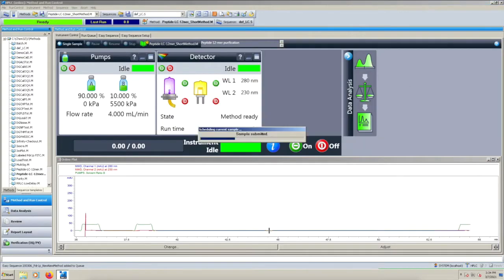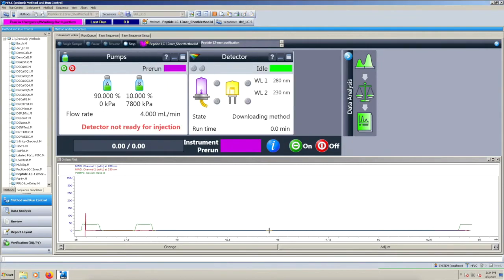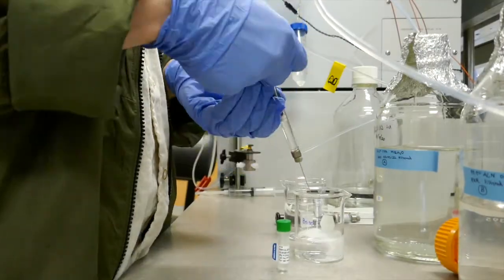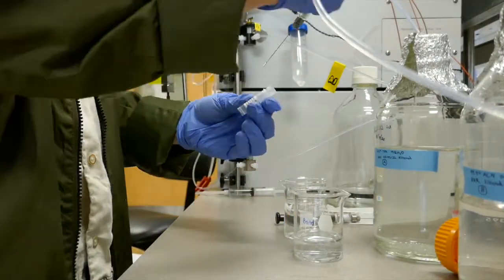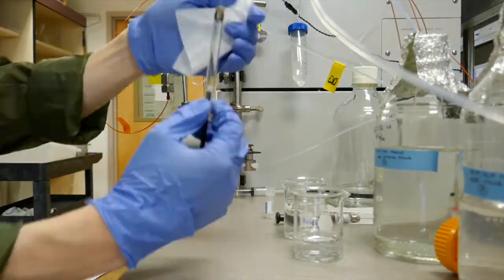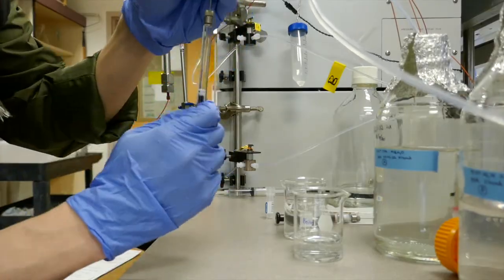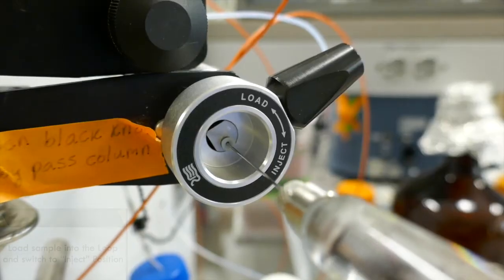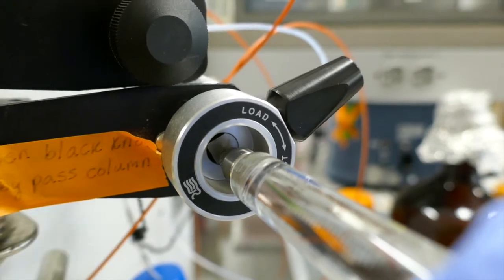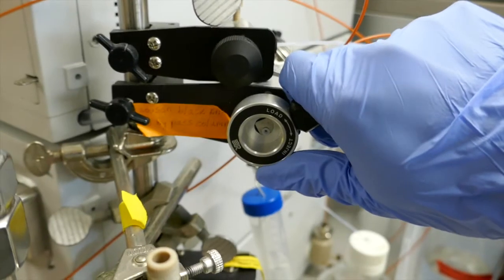After the column is done equilibrating, you can click single sample. Wait for the software to say ready for injection. To start a run, load the injection syringe with your sample. Make sure that you remove any of the bubbles that might be in the syringe. Inject into the loop, remove the syringe, and switch the injection valve to the inject position. That should start the run.